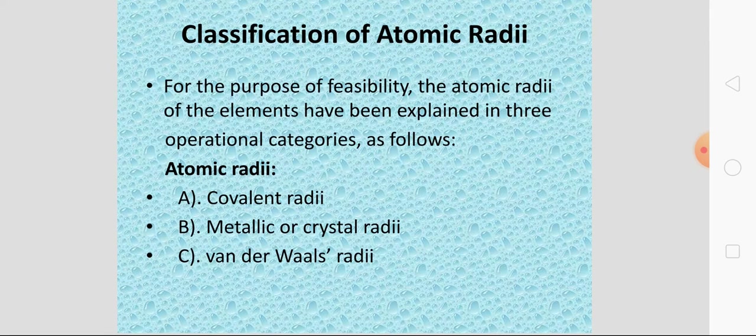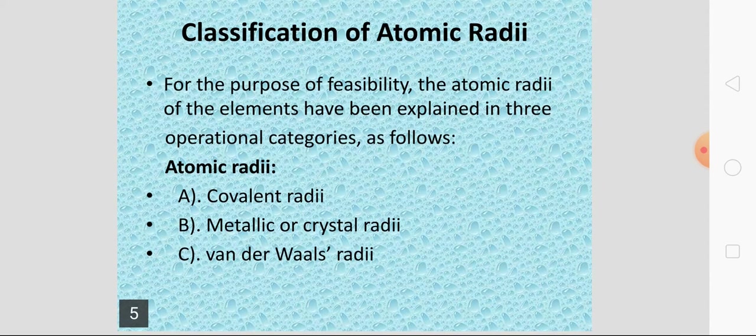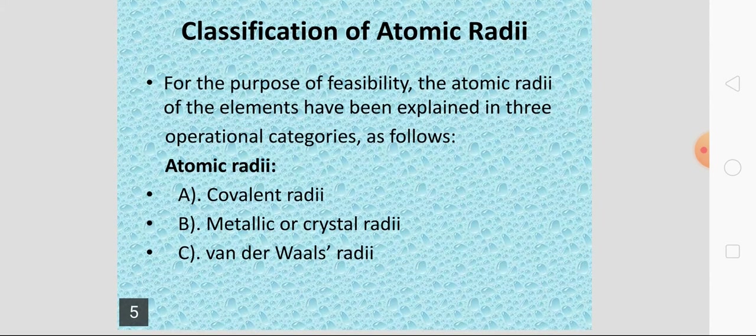For the purpose of feasibility, the atomic radii of the elements have been explained in three operational categories: covalent radii, metallic or crystal radii, and van der Waals radii.